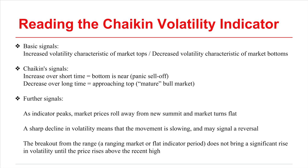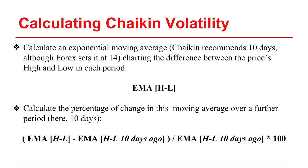So the indicator can be slow to identify emerging trends. In order to calculate the Chaikin Volatility Index, first you calculate an exponential moving average. Chaikin recommends 10 days for the period, but 4x sets it automatically to 14. This average is charting the difference between the price's high and low in each period.